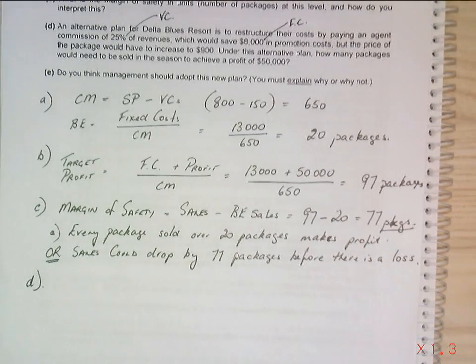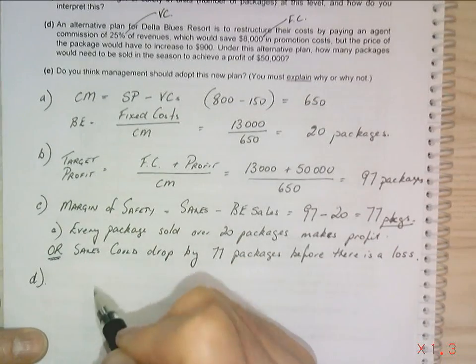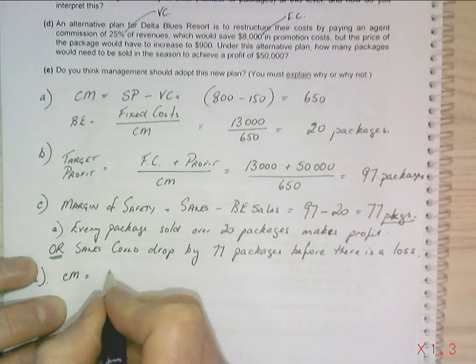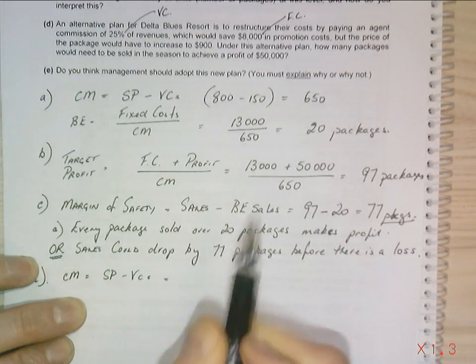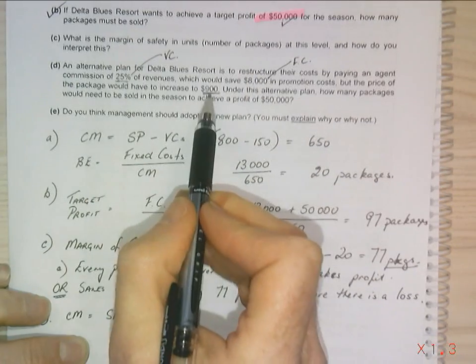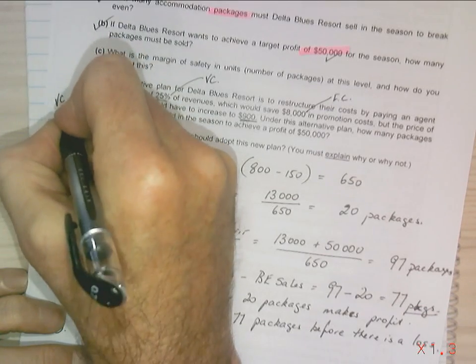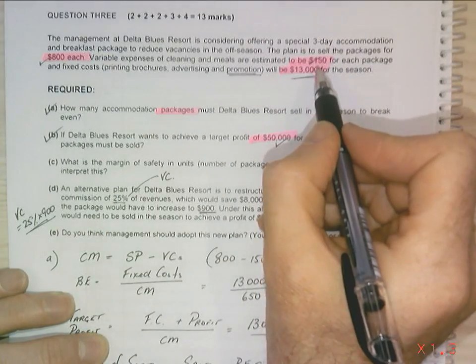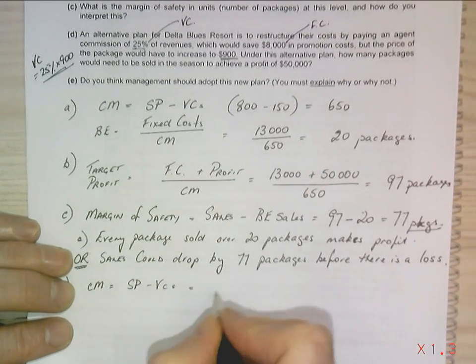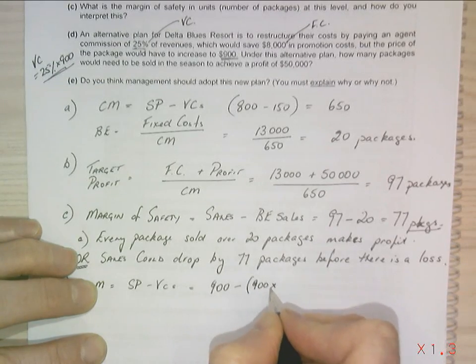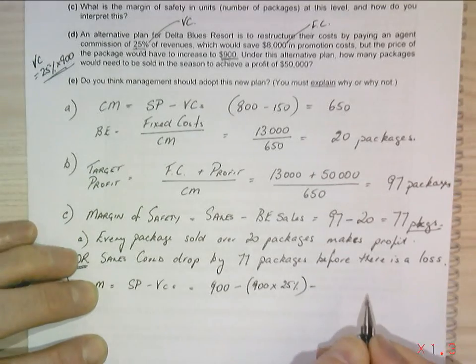So what I'm looking to do here is work out my new contribution margin. My contribution margin is still my selling price minus my variable costs. Now we've got an additional new variable cost, which is this 25%. Now I'm selling for $900 - we're saying it's 25% of revenues. So my variable cost equals 25% times $900. So that becomes a new variable cost plus the original variable cost of $150. So my new selling price is $900 minus my variable costs: first one being $900 times 25%, minus the original variable cost of $150.